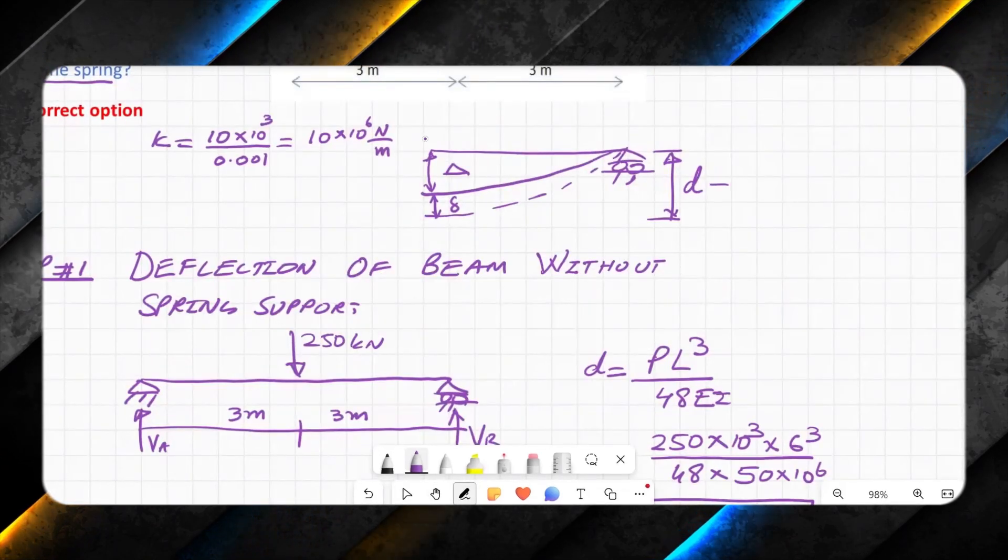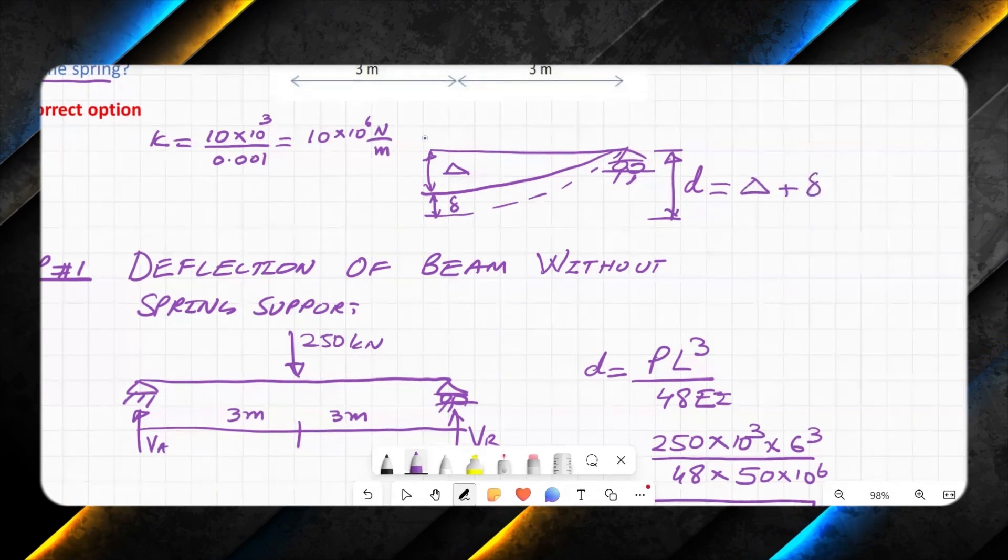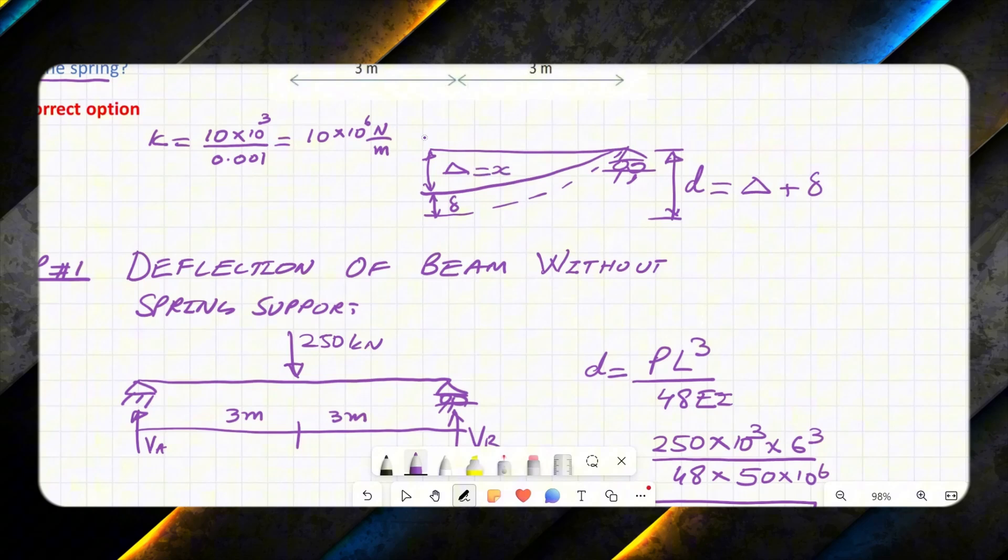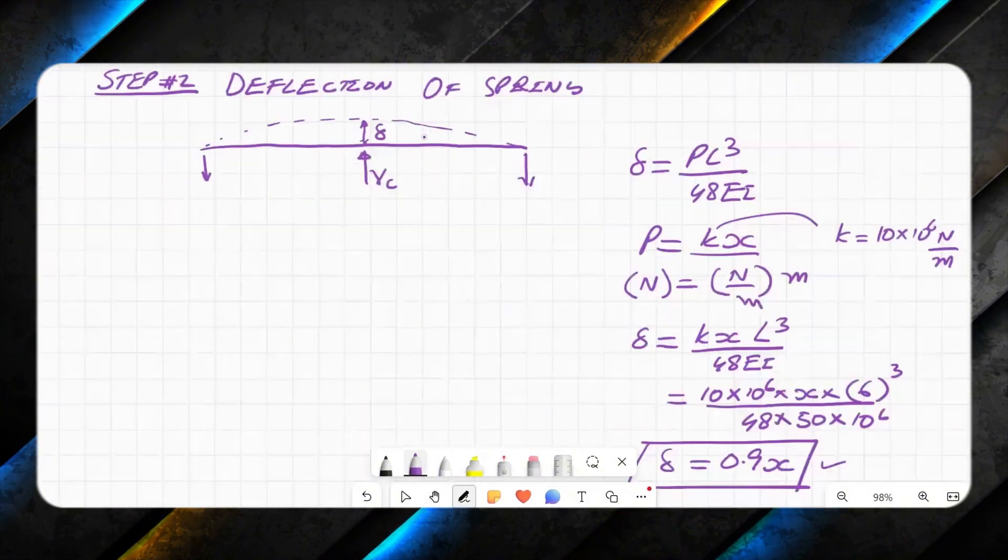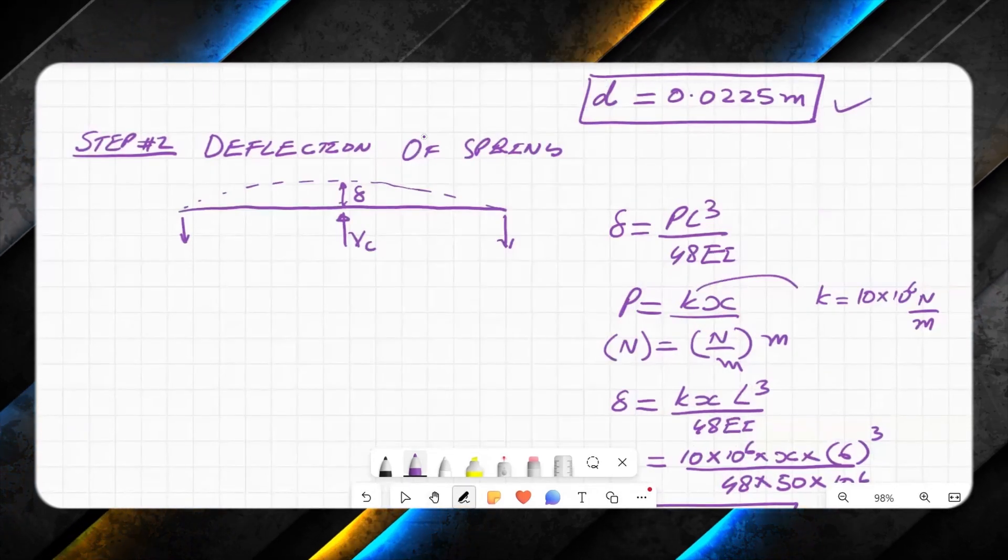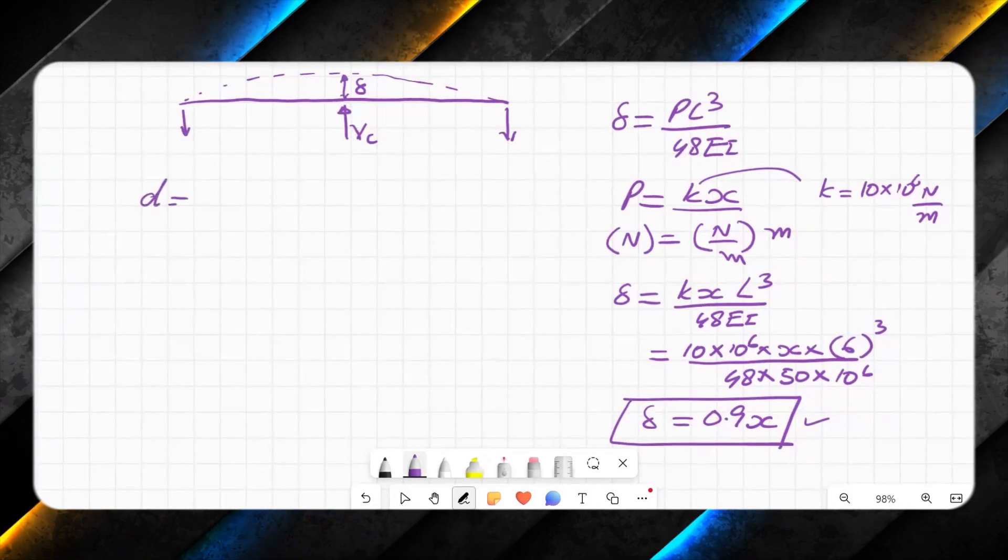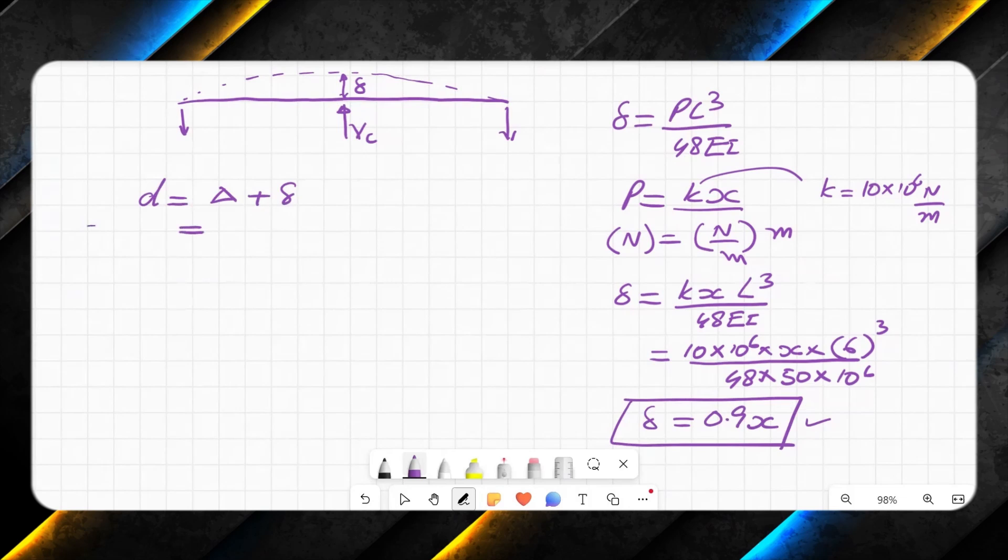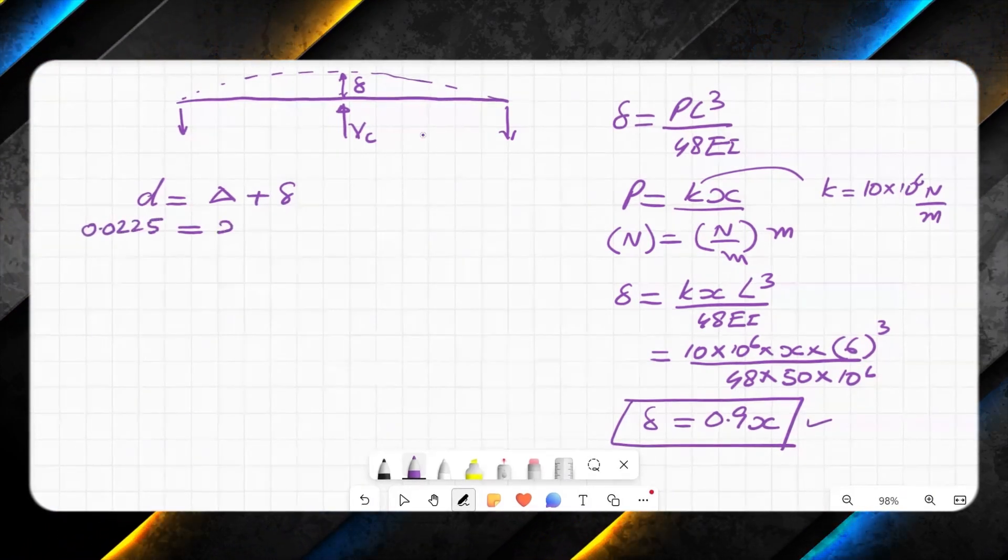Now I have got value of small delta, I've got value of d. Remember that d here is equal to delta plus small delta, where capital delta is equal to x, and that is what we are interested in to find. So I will say small d is 0.0225 m, and here it's 0.9x.